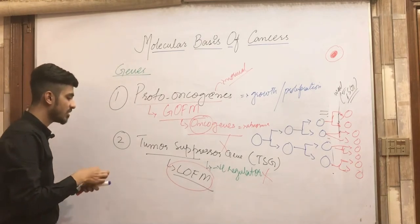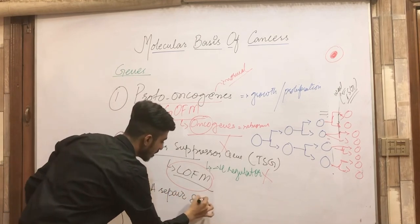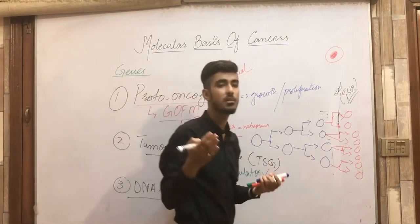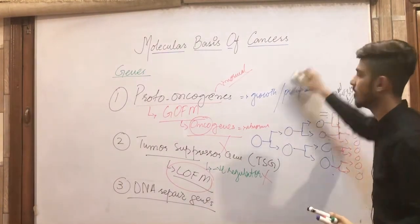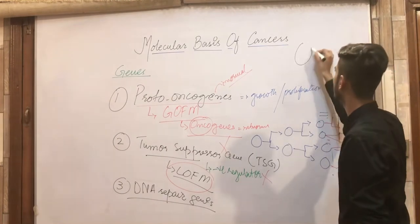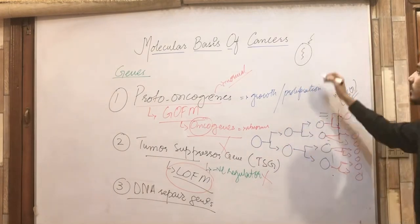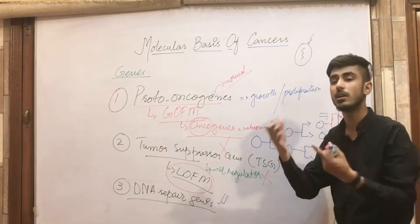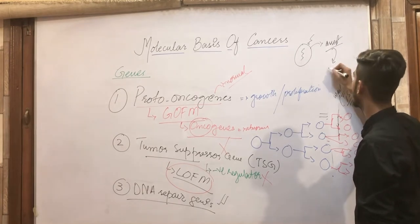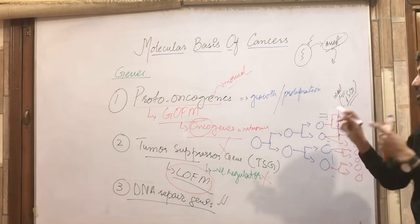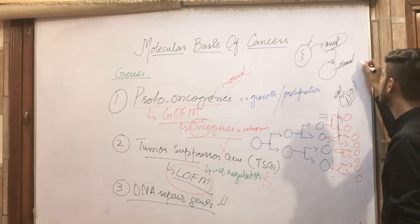The third type of genes we will study are the DNA repair genes. These are also normal genes present in our body. Whenever there is damage to our cell — for example, due to any stimuli causing damage to our genetic material or DNA — there are certain genes that carry out the repair. These genes cause cell cycle arrest, and in that arrest phase, they carry out their function, repair the DNA quickly, and then make the cell normal again.